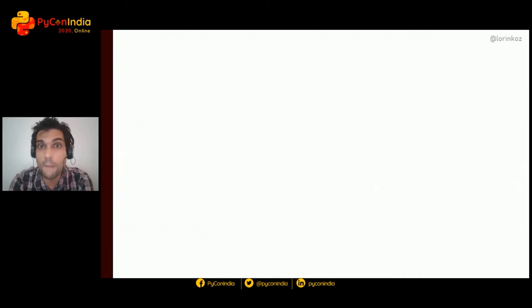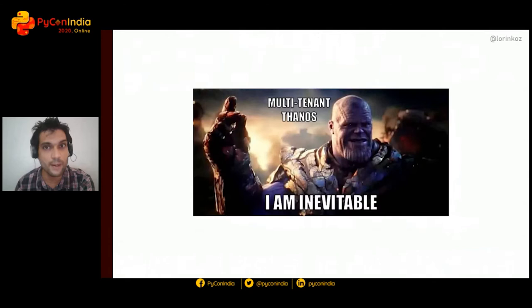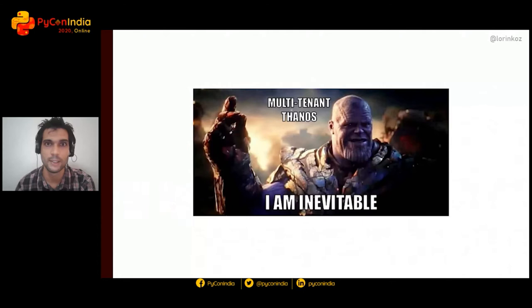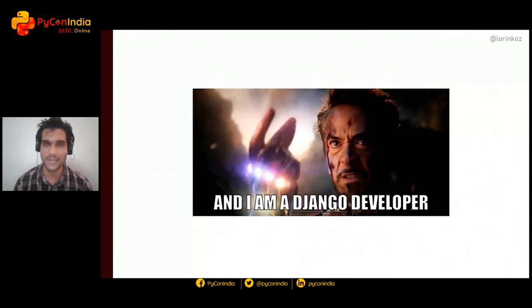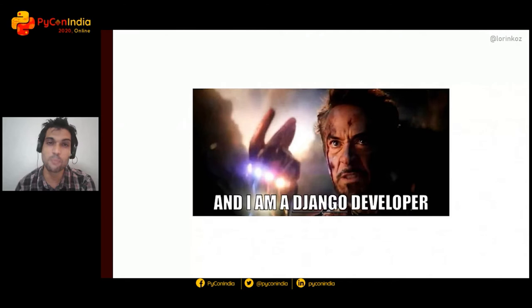Why does this matter? I firmly believe that if you are a web developer, at some point in your career you're going to cross paths with multi-tenancy. It's a medium-to-complex task — it's just not a piece of cake. Multi-tenancy is going to be kind of inevitable, like in the movie. But the good news is we're Django developers, and so far there's no major challenge Django hasn't been able to overcome.